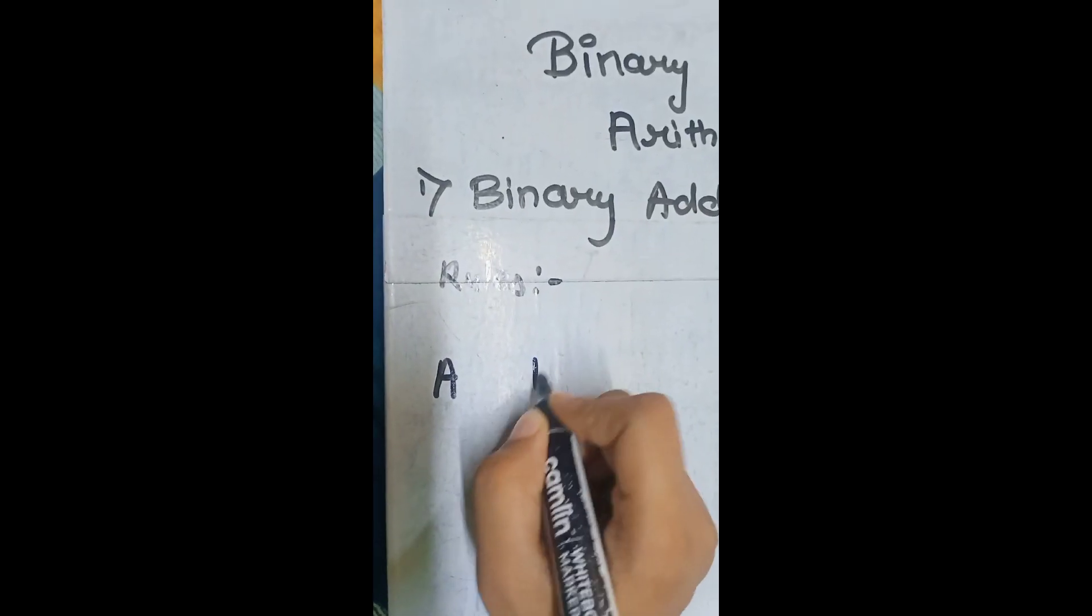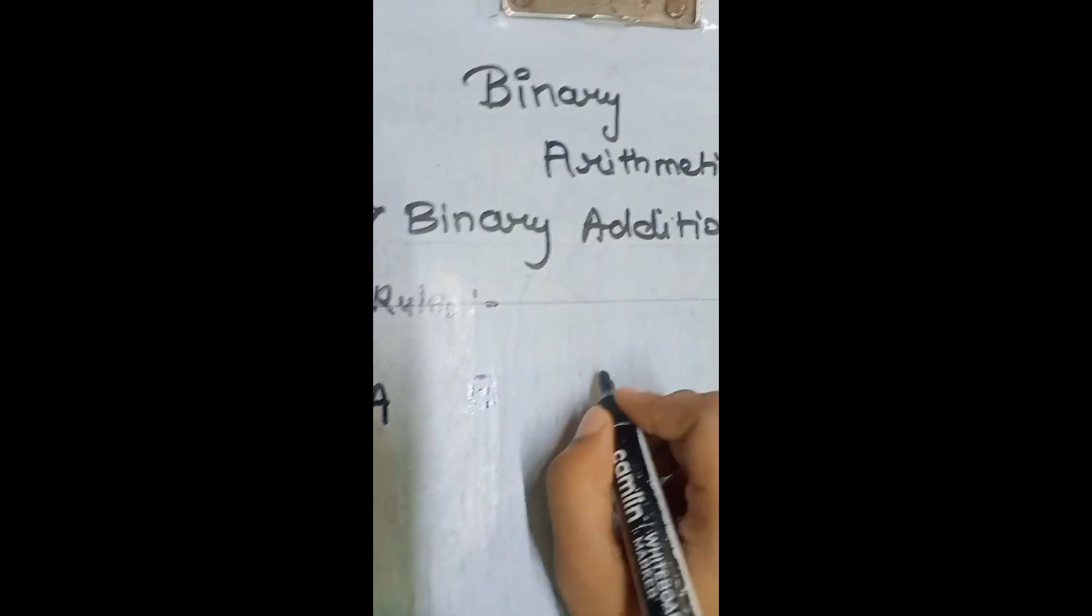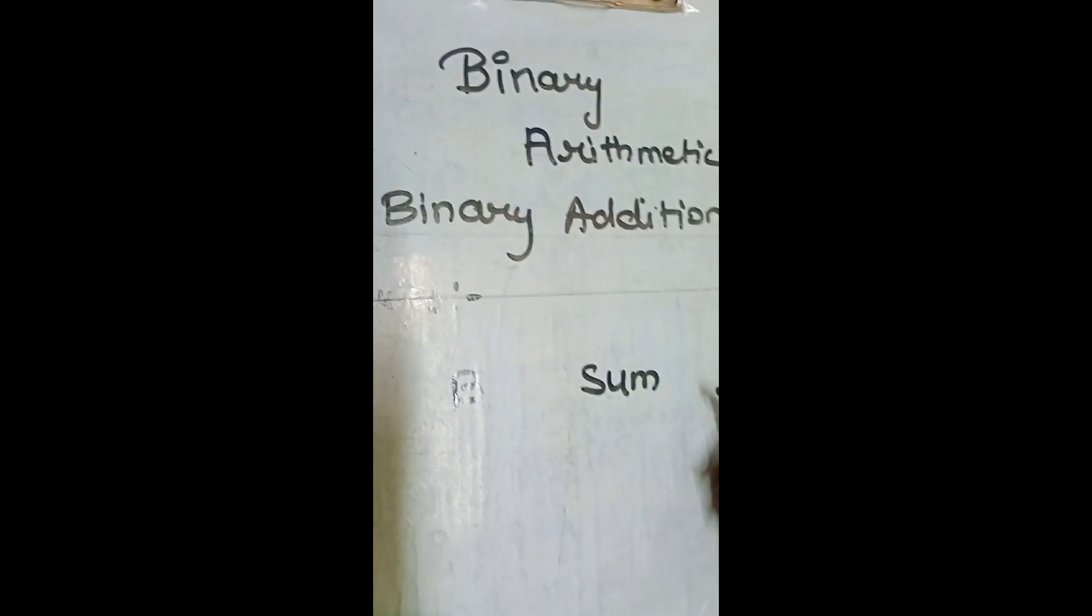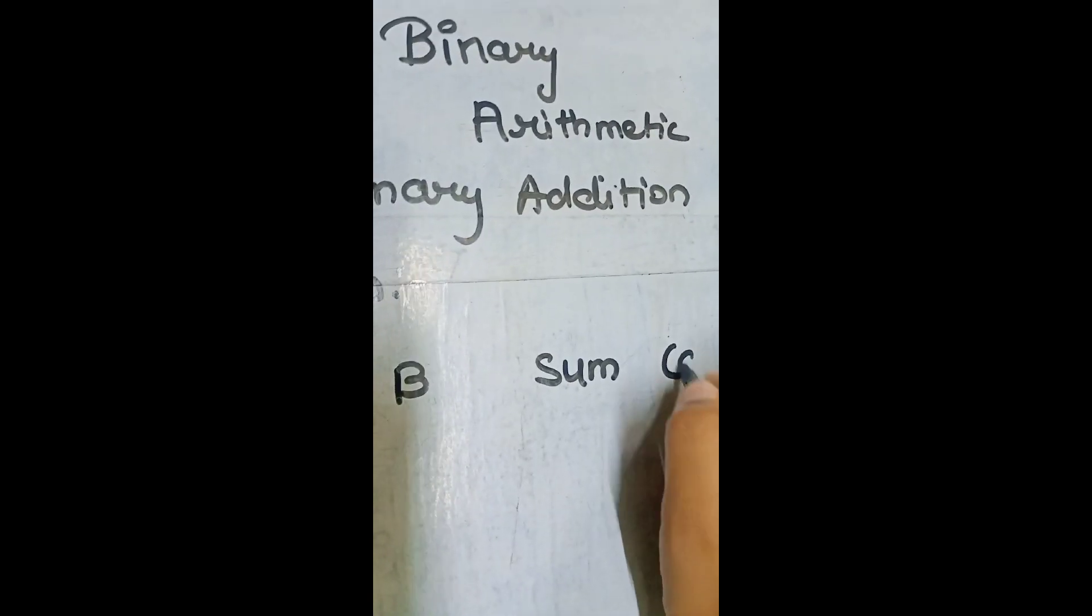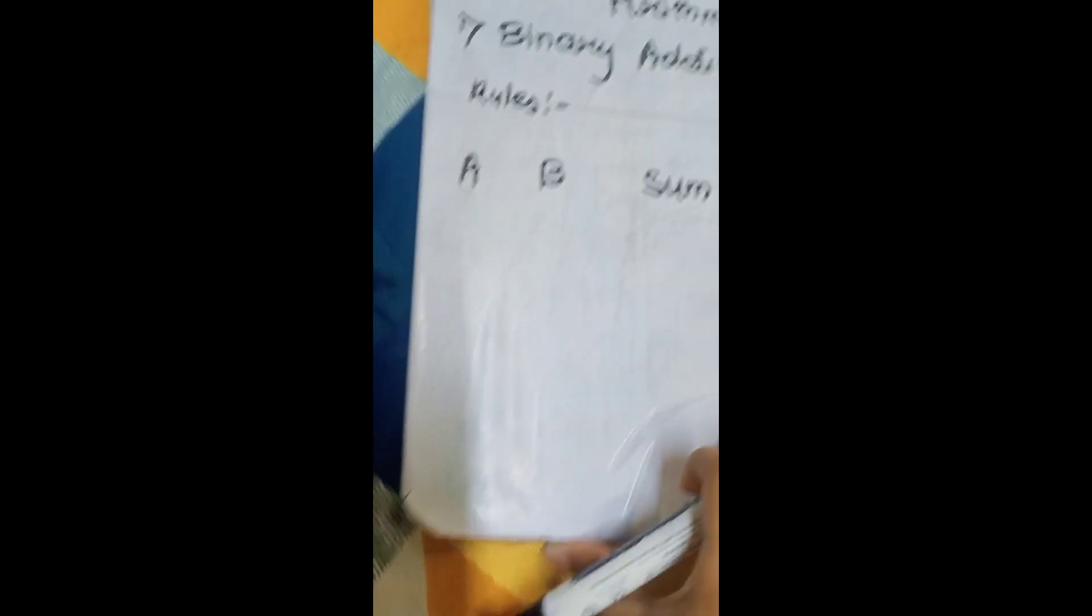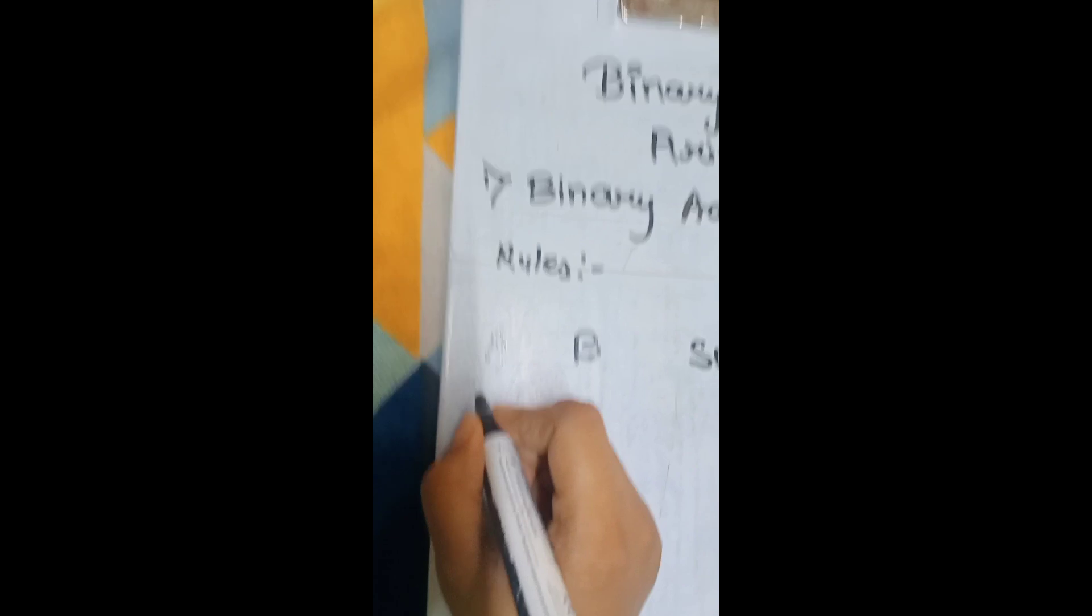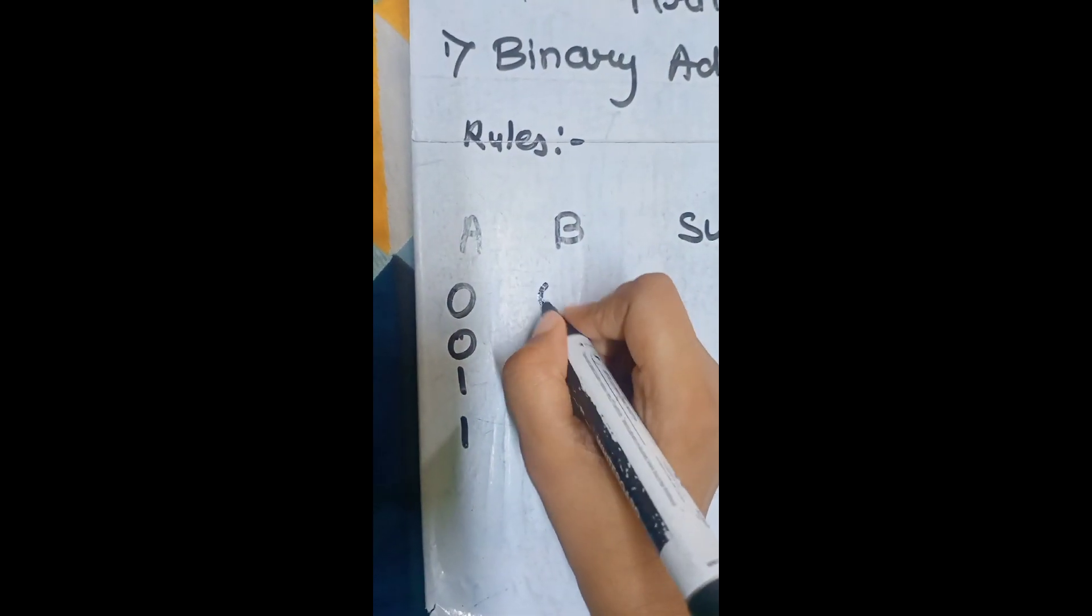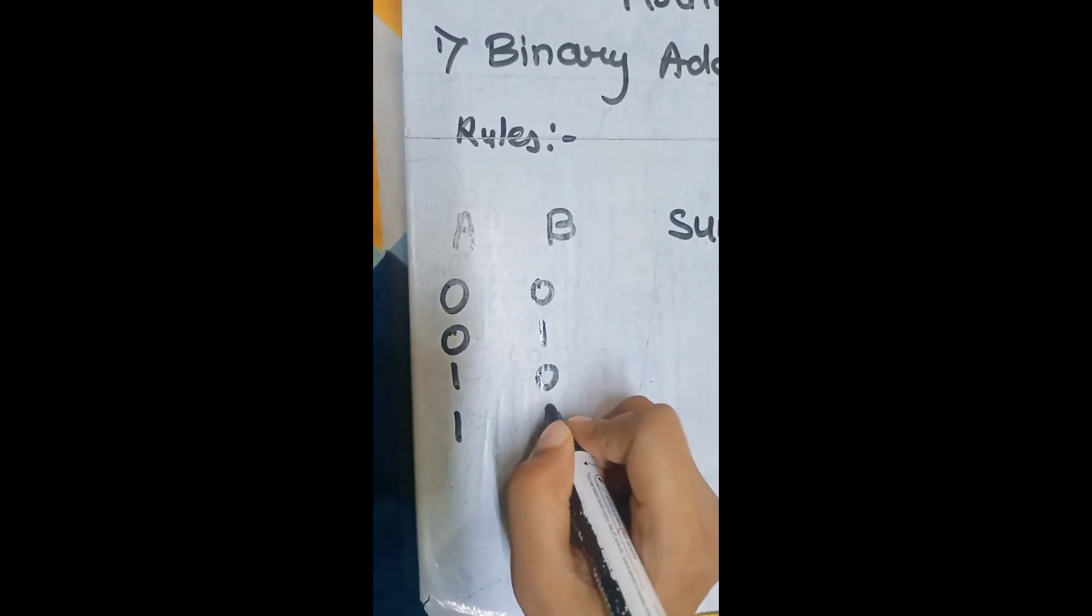Take two inputs, A, B. We will write here some of the inputs and here carry. So, take input as 0, 0, 1, 1 and here 0, 1, 0, 1, so that you get four combinations.